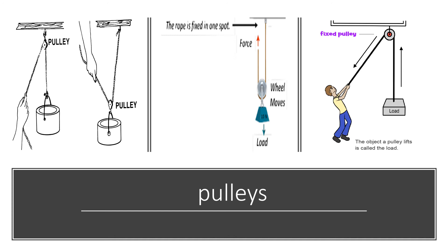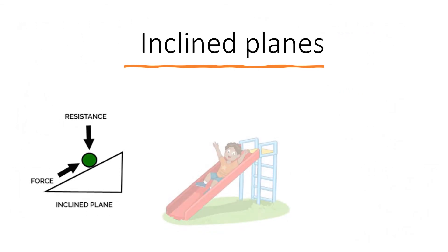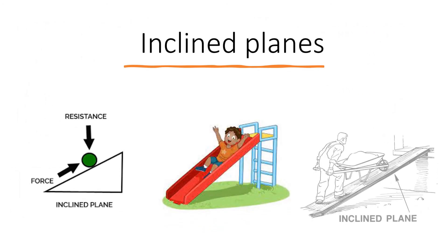Here are some examples of pulleys. The rope force T moves a load. A fixed pulley — the object a pulley lifts is called the load.